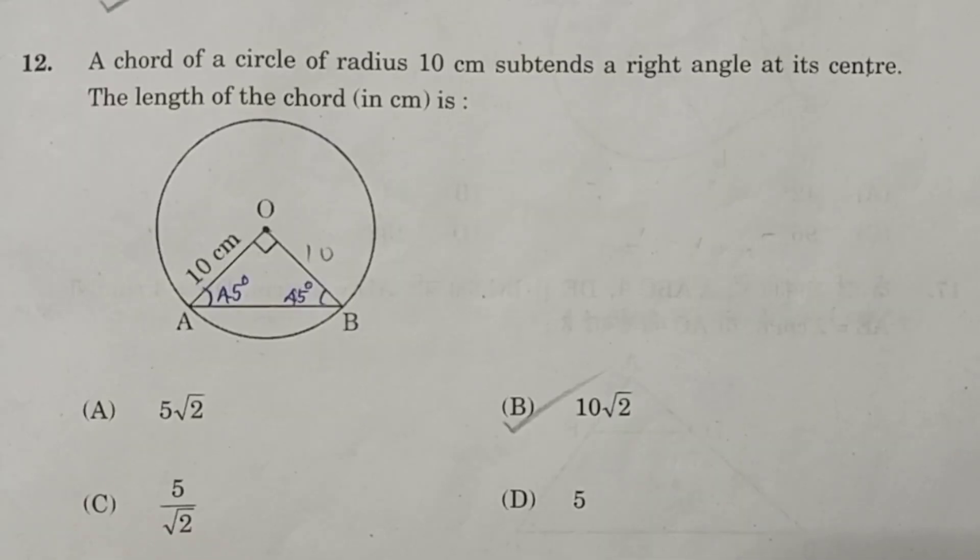Question number 12. A chord of a circle of radius 10 cm subtends a right angle at its centre. The length of the chord in cm is. The radius is given 10 cm. The radii are same, therefore the triangle ABO is an isosceles right triangle, and each angle is 45 degrees, therefore AB is equal to 10 root 2.